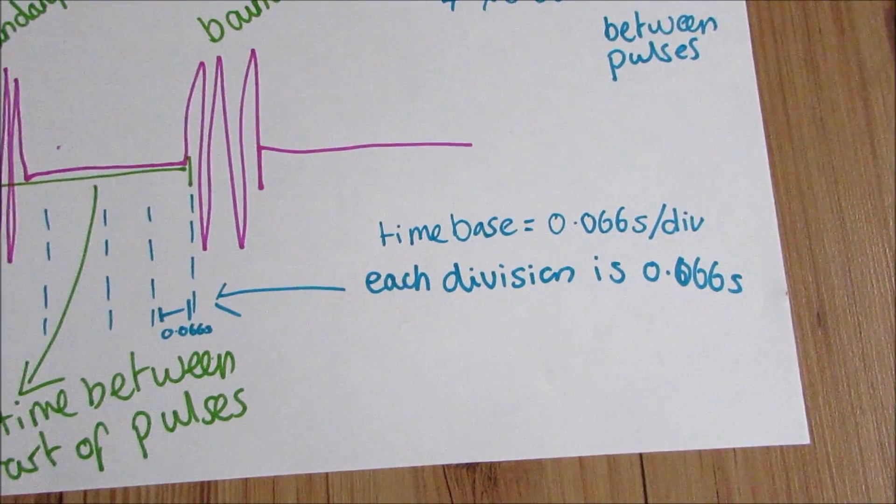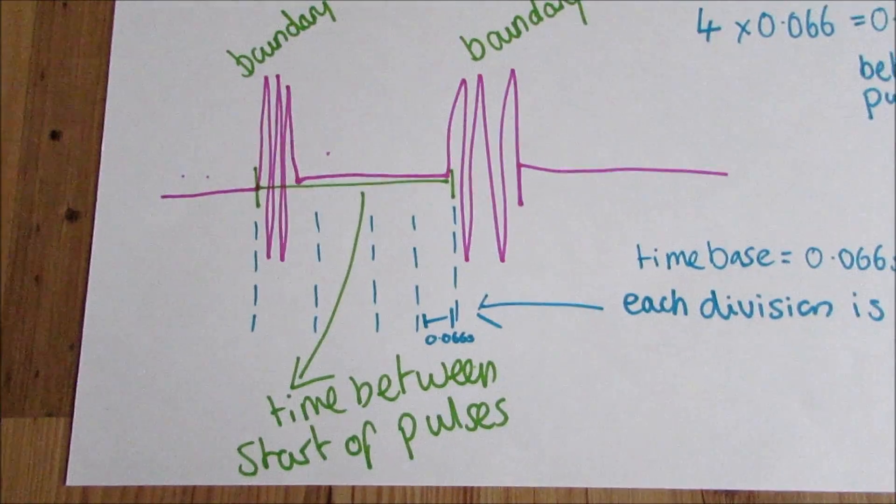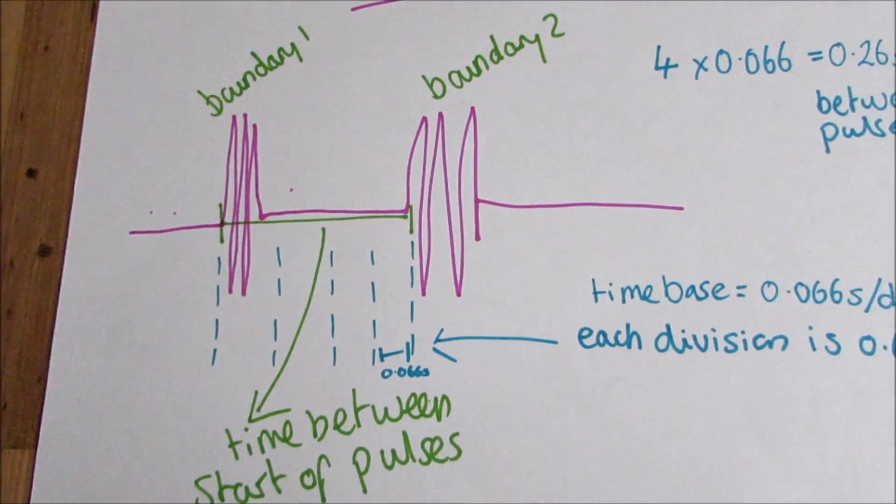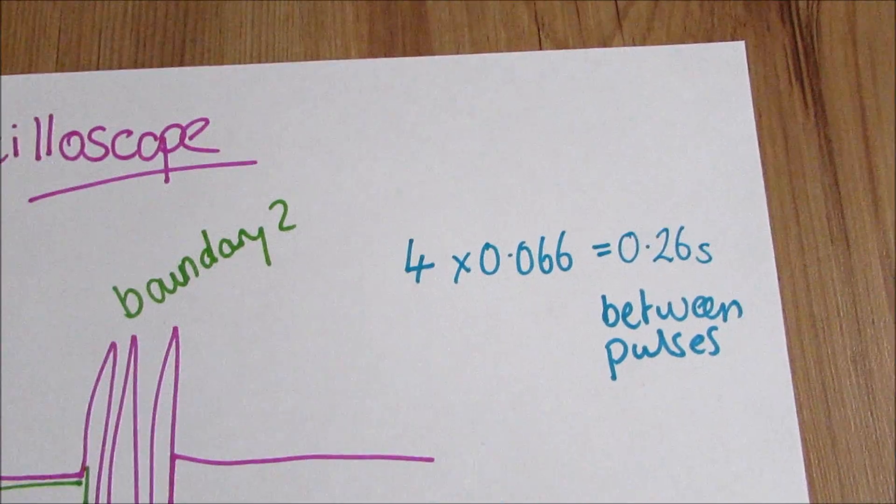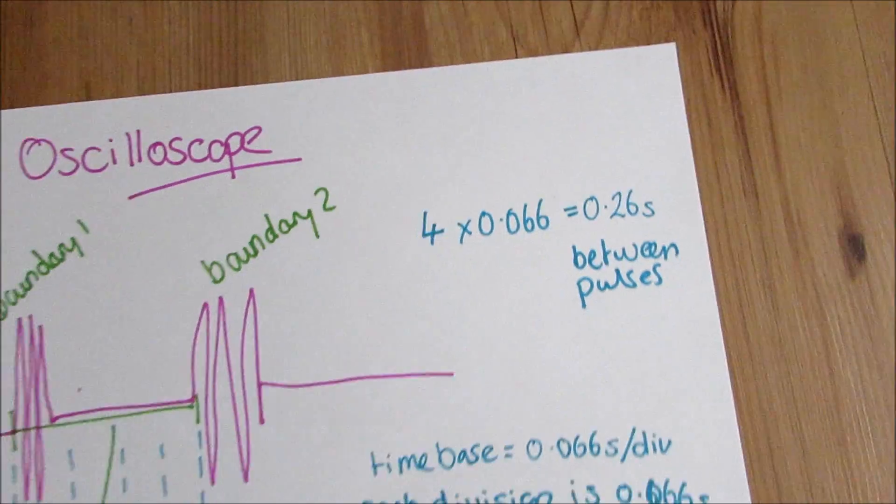The time base here is 0.066 seconds per division. You'll notice there are four divisions between the start of each pulse. So the time between each pulse is 4 times 0.066, so 0.26 seconds.